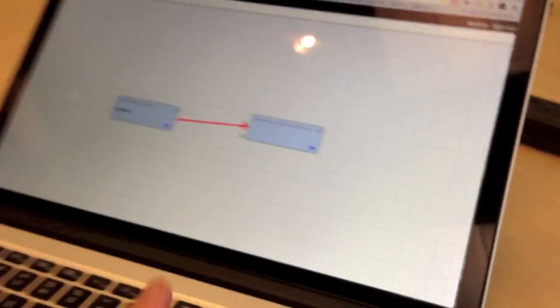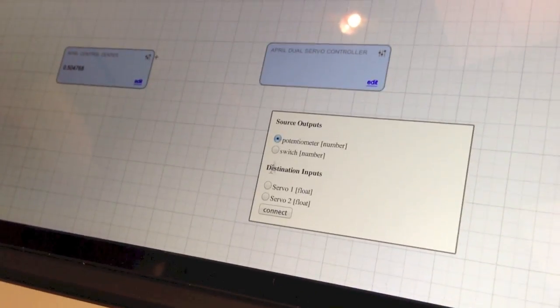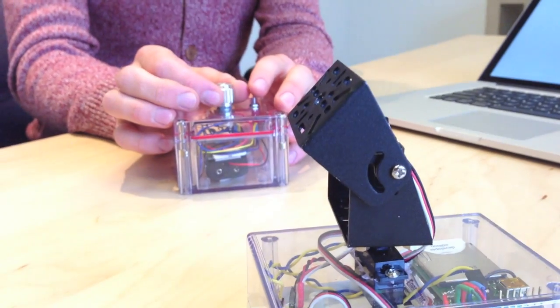Similarly, if we disconnect those two, connect the pot to the second servo, we wind up with tilt control.